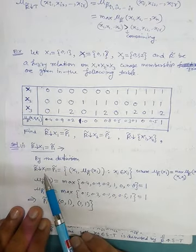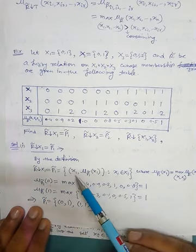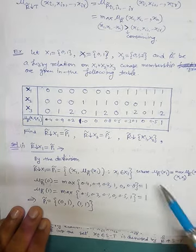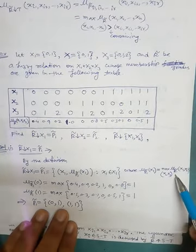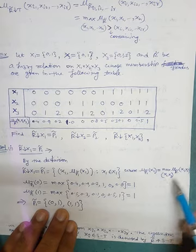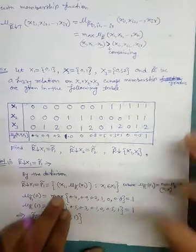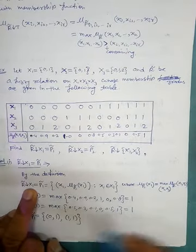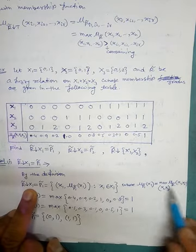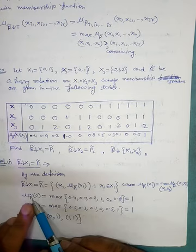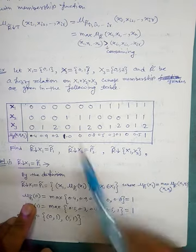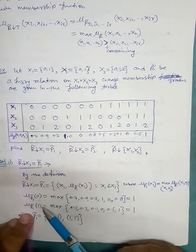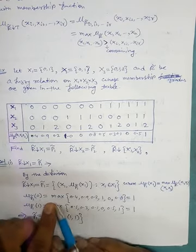First, the projection of R on X1, denoted by P1. By the definition, R on X1 = P1 = { (x1, mu_P1(x1)) | x1 ∈ X1 }, and the membership grade is mu_P1(x1) = max over (X2, X3) of mu_R(x1, x2, x3). Because we are projecting onto X1, we remove X1 from {X1, X2, X3} and maximize over X2 and X3.